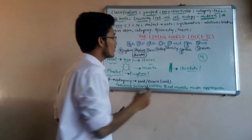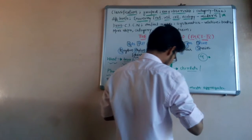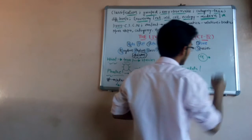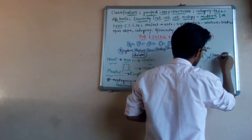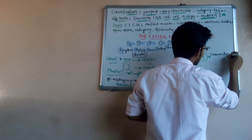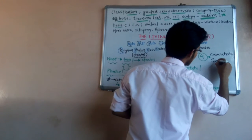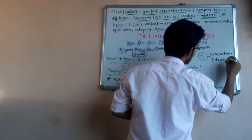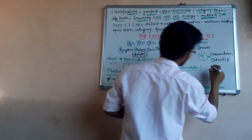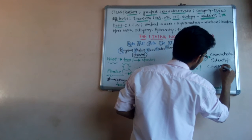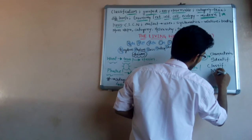There are four bases of taxonomy according to NCERT, and we have placed them in a regular manner. What are the four bases? These are: characterization, identification, classification, and nomenclature.